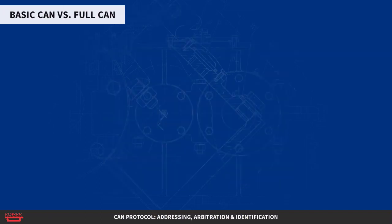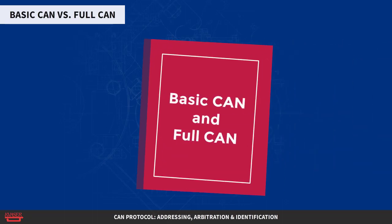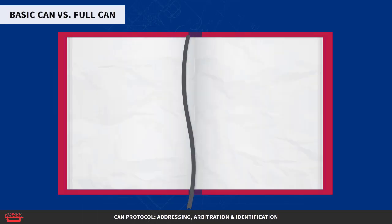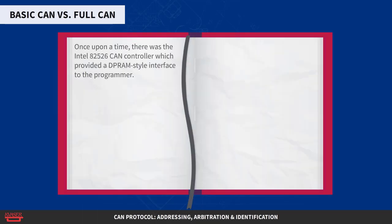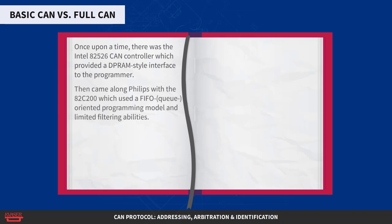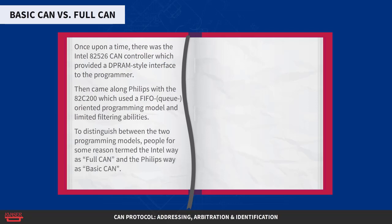Basic CAN versus Full CAN. The terms Basic CAN and Full CAN originate from the childhood of CAN. Once upon a time, there was the Intel 82526 CAN controller, which provided a deep RAM-style interface to the programmer. Then came along Philips with the 82C200, which used a FIFO-queue oriented programming model and limited filtering abilities. To distinguish between the two programming models, people termed the Intel way as Full CAN and the Philips way as Basic CAN.